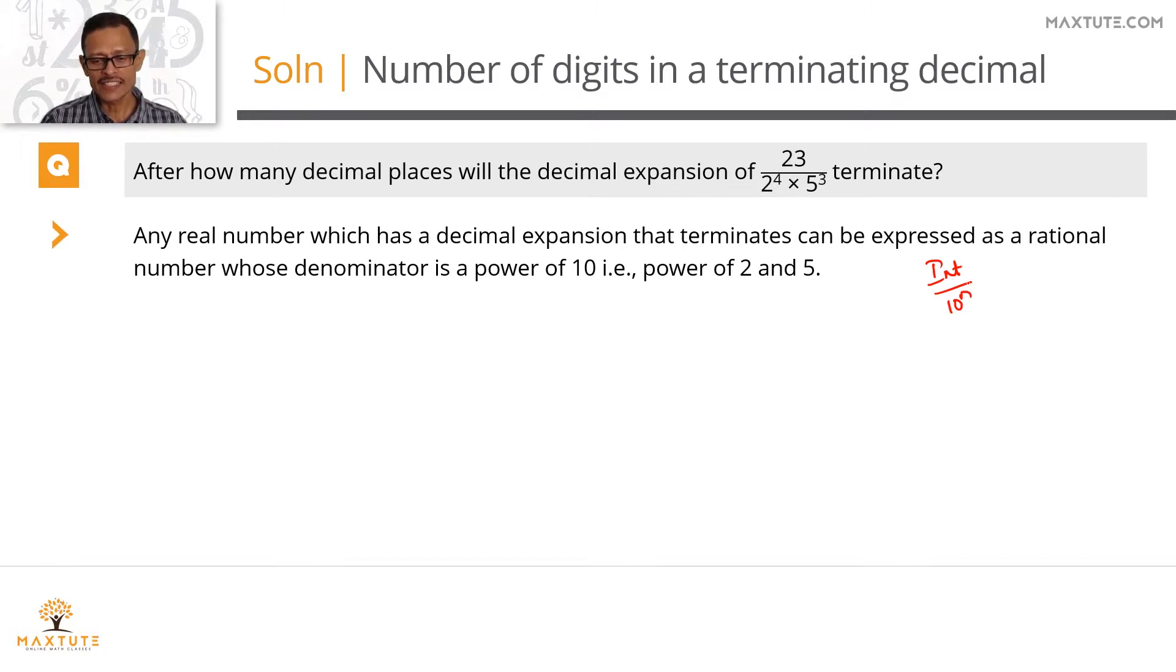If you can write this as an integer in its least form and the denominator is a power of 10, the power of 10 is going to be the number of decimal places after which it will terminate. Let's get around to doing that. In this expression that we have, we have the power of 2 as 4 and the power of 5 as 3. The powers of 2 and 5 are different. So let's rewrite this entire expression in such a way that the powers of 2 and powers of 5 in the denominator are the same.